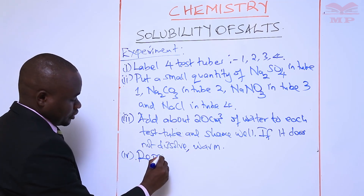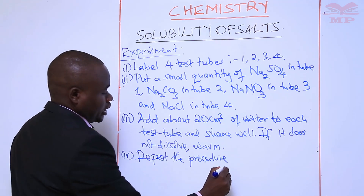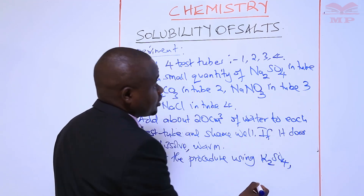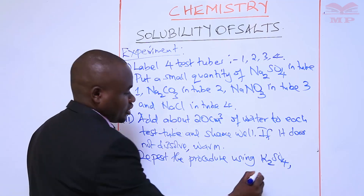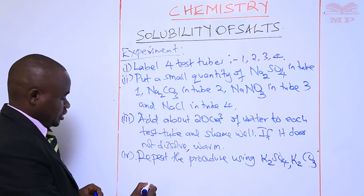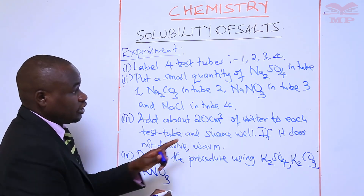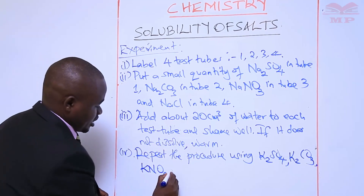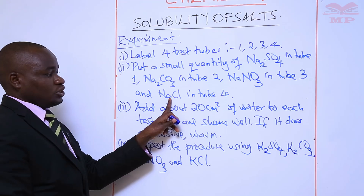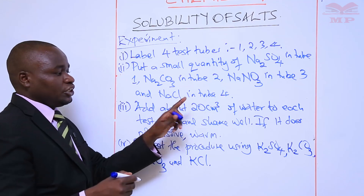Then repeat the procedure using potassium sulfate instead of sodium sulfate, potassium carbonate instead of sodium carbonate, potassium nitrate, and potassium chloride instead of sodium chloride. So you just repeat the procedure: put the salt in a test tube, then add water, and shake.